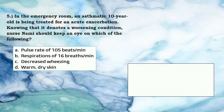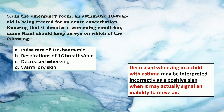Question number 5. In the emergency room, an asthmatic 10-year-old is being treated for an acute exacerbation. Asthma is a chronic inflammatory disease of the airways. Decreased wheezing in a child with asthma may be interpreted incorrectly as a positive sign when it may actually signal an inability to move air. A silent chest is an ominous sign during an asthma episode. Increased wheezing may actually signal that the child's condition is improving. Dry skin indicates improvement as the child is normally diaphoretic during exacerbation. Therefore, the correct answer is C: decreased wheezing.